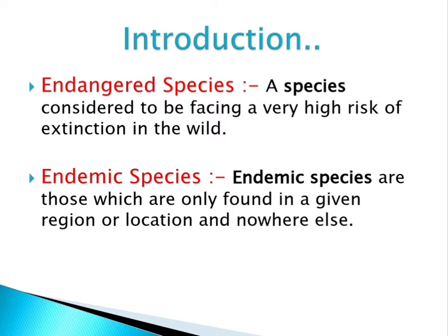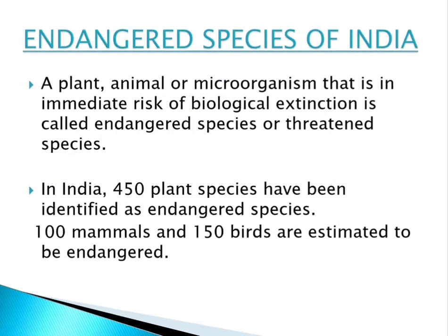Endemic species are those which are found only in a given region — they are restricted to a particular region. According to Indian flora and fauna, there is a high number of endangered species including plants, animals, and microorganisms. Any plant, animal, or microorganism in immediate risk of biological extinction is called an endangered or threatened species. In India, about 450 plant species have been identified as endangered.